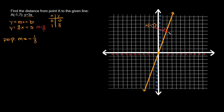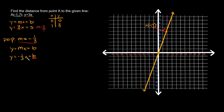Now we need the equation of the perpendicular line so we can find the intersection point. We know the slope is negative 1 third, so we write y equals negative 1 third x plus b. We need to find b, and to do that we plug in our known point, negative 1 comma 7, for x and y.